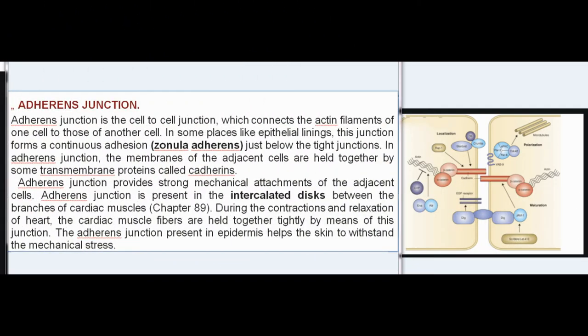Adherence junction: The adherence junction is a cell-to-cell junction which connects the actin filaments of one cell to those of another cell. In some places like epithelial linings, this junction forms a continuous adhesion just below the tight junctions. The membranes of adjacent cells are held together by transmembrane proteins called cadherins. Adherence junction provides strong mechanical attachments of adjacent cells and is present in the intercalated discs between branches of cardiac muscles. During contraction and relaxation of the heart, cardiac muscle fibers are held together tightly by this junction. The adherence junction in the epidermis helps skin withstand mechanical stress.